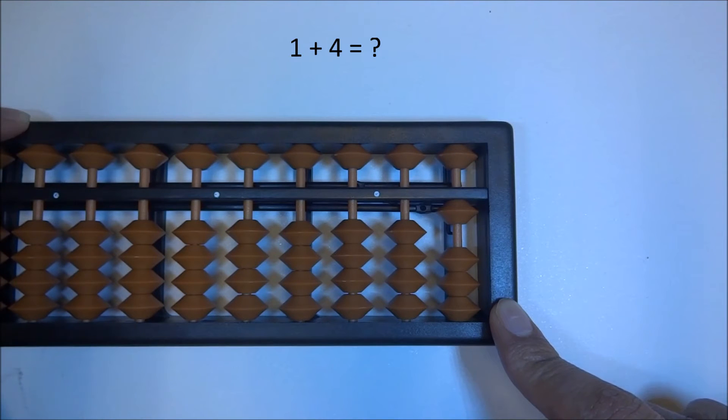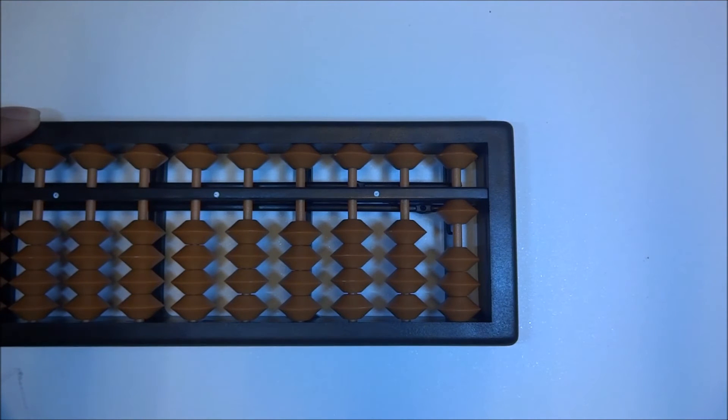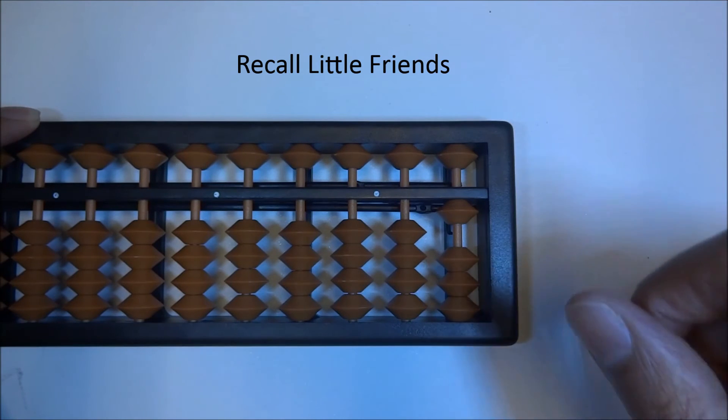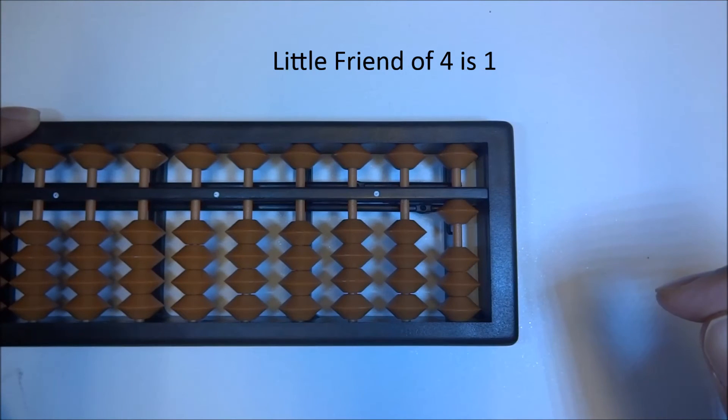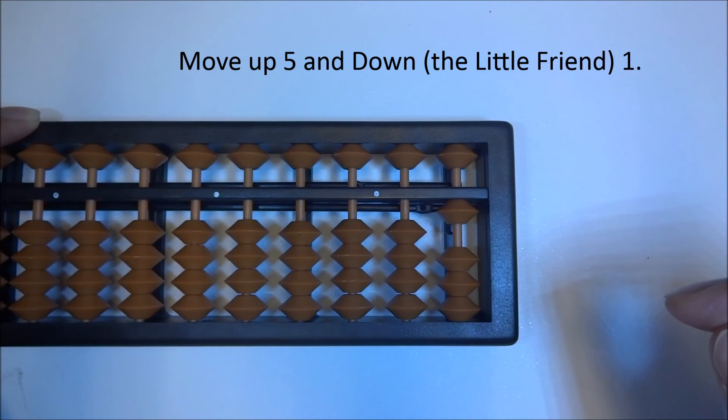Now let's go back to what we learned in our section of complements or little friends as we call them. So we need to do up 4 in order for this addition. So now that we don't have 4 beads, here's what we're going to do. We're going to find a little friend of 4. So in order to move up 4, what we need to do is move up 5 and down 1. Little friend of 4, if you remember, is 1.